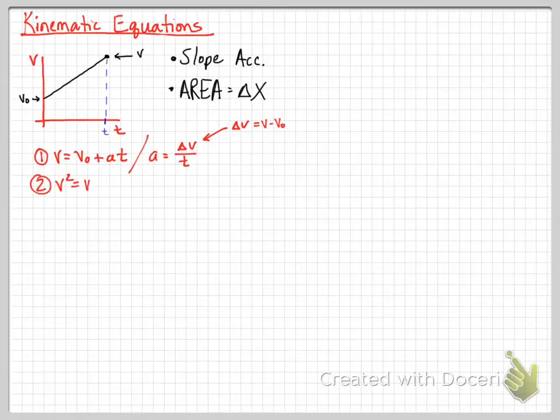The second one is v squared equals v naught squared plus 2a change in x. This equation is something that I'm not going to show you on this video. If you really are interested in figuring out where it comes from, feel free to come talk to me. But this equation does not deal with time, and we're just going to give that one to you.